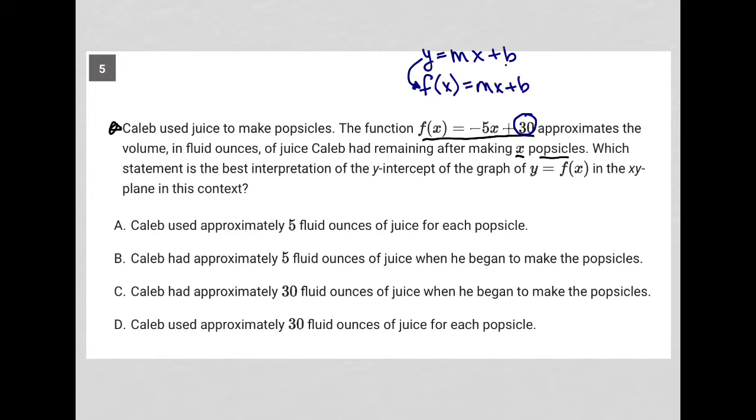But the main point here is that the b position is the y-intercept. So that's why I know that 30 here, because it's in the b position of this function, is the y-intercept.